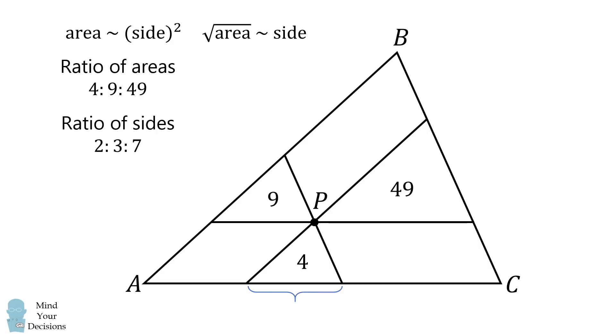Suppose this side length is 2 times x. Because the triangles are similar, this side length will be 3x, and this side length will be 7x.